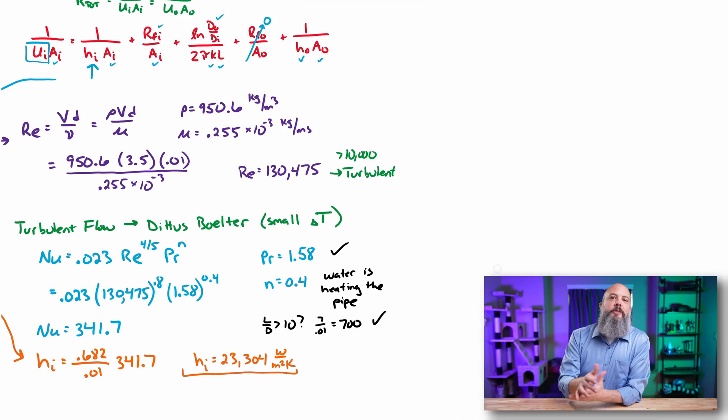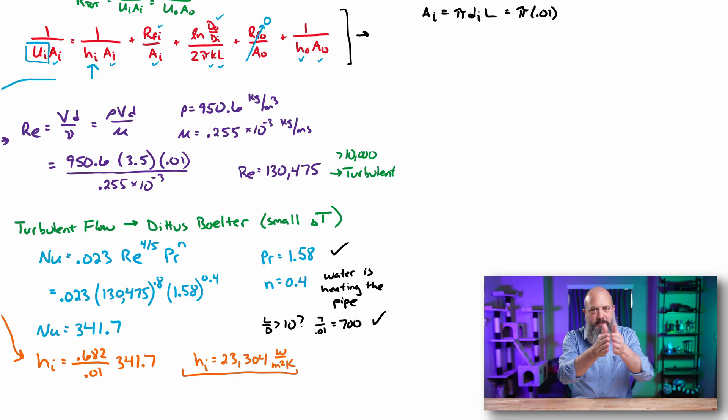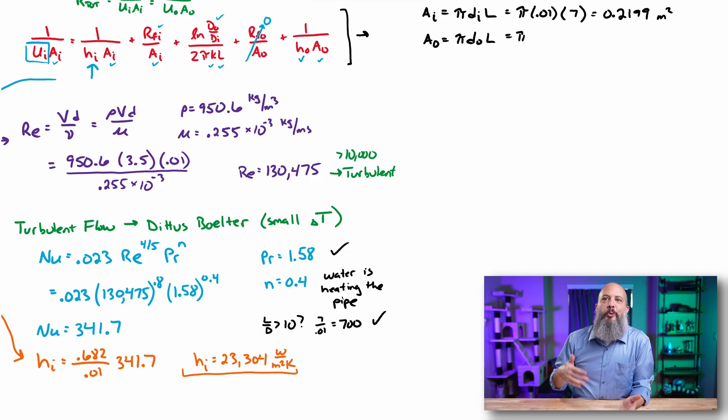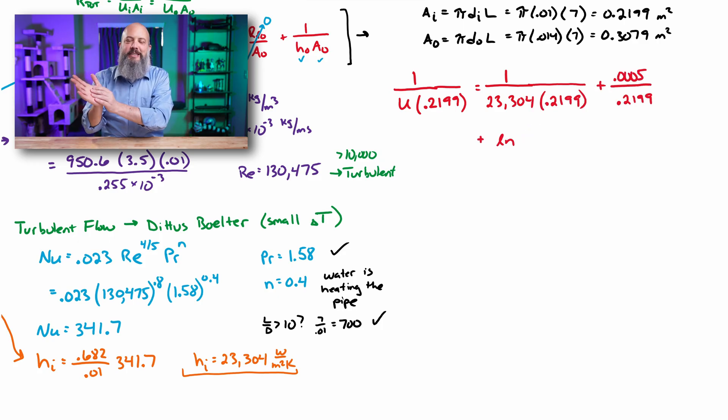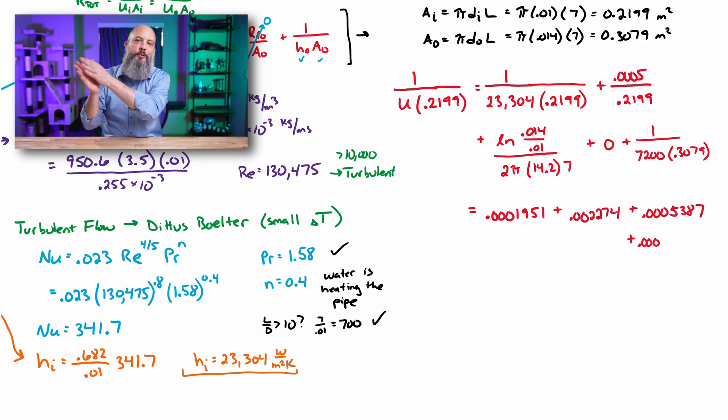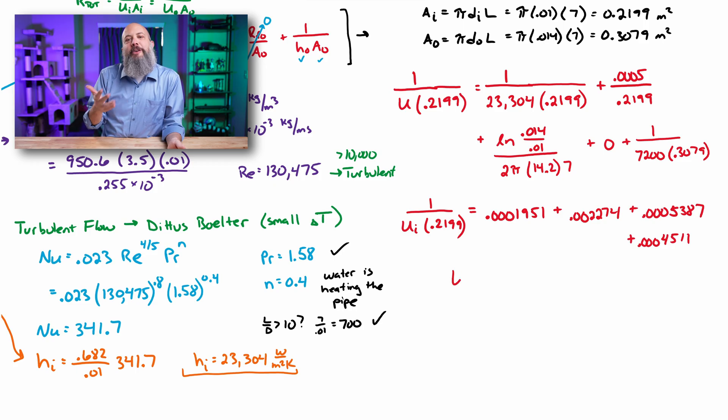You can find our surface area. Surface area of a cylinder is the circumference pi times diameter times the length. So we have 0.2 and 0.3 for our surface areas. Making sure that I use my inner surface area on the inside with U, it's U_i·A_i, so the 0.2 area along with 1 over U, get a value for the heat transfer coefficient of 1315 watts per meter squared Kelvin.